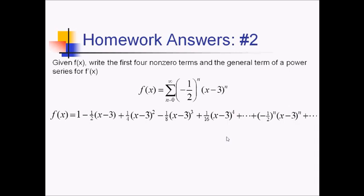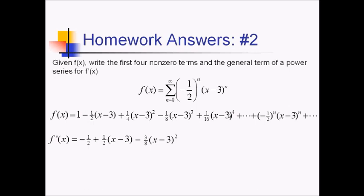Let's go ahead and take the derivative from left to right. The 1 is going to go away. This next term is negative 1 half times (x minus 3), but taking the derivative, that constant goes away, so we just have negative 1 half. Then keeping the parentheses, this is just going to be 1 half times (x minus 3). Next, this is going to be minus 3 over 8 times (x minus 3) squared. And next, multiplying by 4, this will be 1 fourth (x minus 3) cubed. For the general term, we multiply by n, so this will be n times (negative 1 half) to the n times (x minus 3) to the n minus 1.